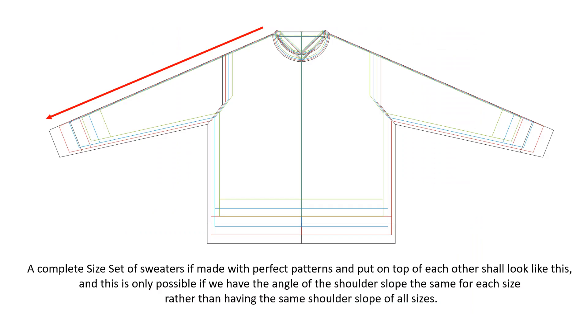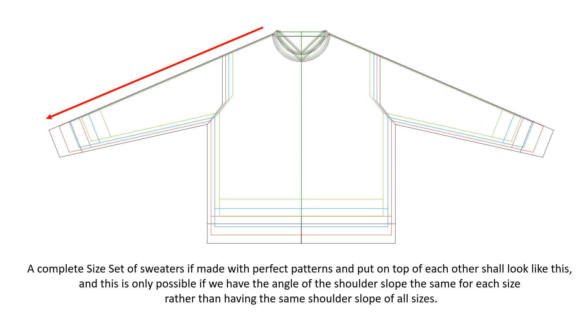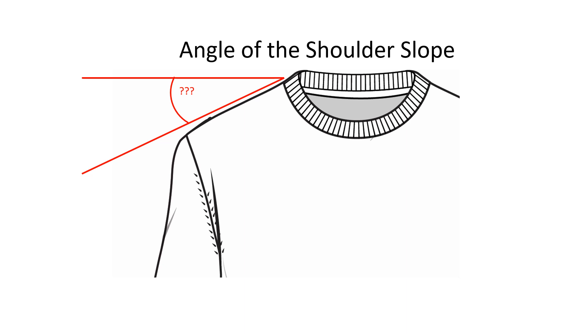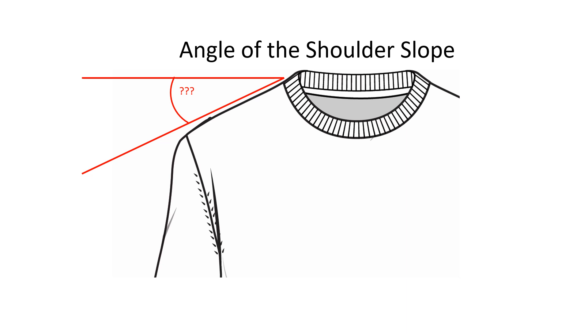Most importantly, the arms of the sweater shall extend at the same angle as that of the shoulder slope. The sleeves shall not puff out of the shoulder joint, nor shall they cave in. Therefore the most important measurement in a sweater is the slope of the shoulder and the arm, as the angle created by the shoulder shall be the angle of the sleeve slope as well. Surprisingly, the shoulder slope is not given due respect by the knitters and their customers that it demands. Now that we talk about the angle of the shoulder slope, and not the measurement of the shoulder drop, it becomes necessary to understand the geometry of the fully fashioned garment.